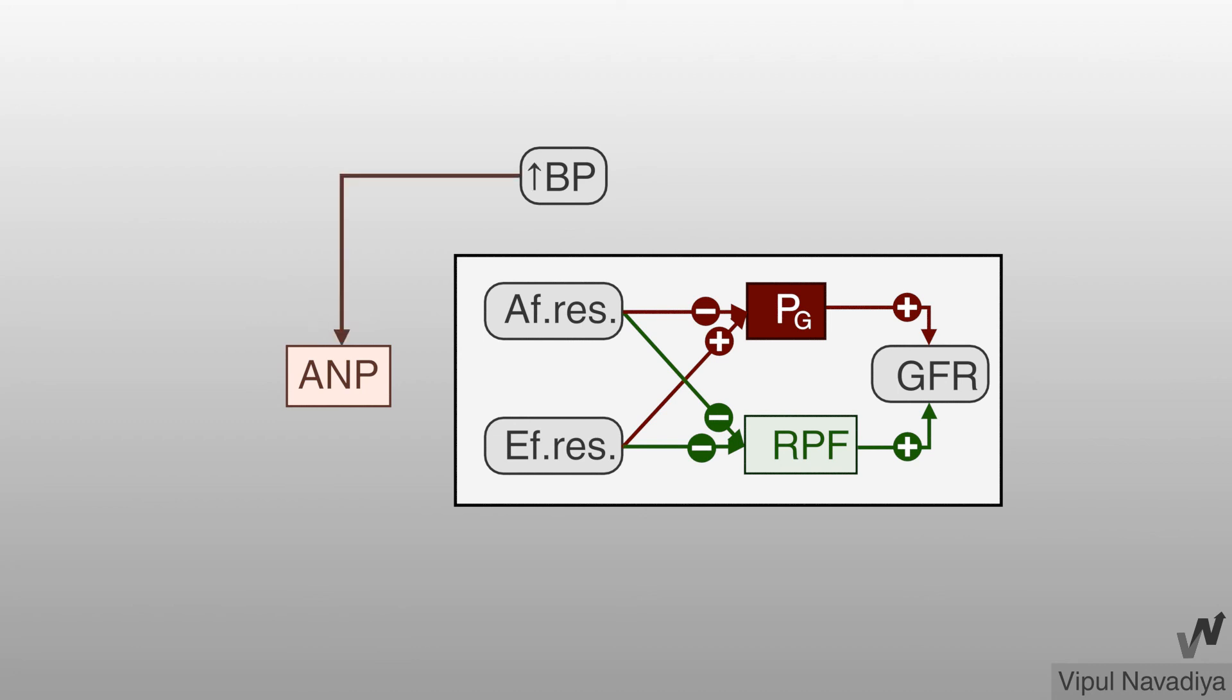Now atrial natriuretic peptide. In contrast to previous two pathways, this pathway is activated when blood pressure is high. Atrial natriuretic peptide causes dilatation of afferent and constriction of efferent arterioles. Final effect is increase in GFR.